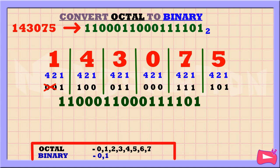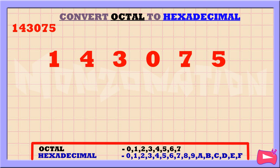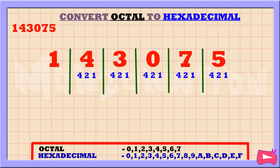We write a little 2 down here to indicate that this is a binary number, base 2. Let's convert the octal number 143075 to hexadecimal. The first step is to separate each octal digit. Then, let's write down 4, 2, and 1 below for each octal number. Let's start from the right. As you can see, 5 is the sum of 4 and 1. So, we're going to replace 4 and 1 with 1. We didn't use the 2, so let's replace it with a 0. Next, 7 is the sum of 4 plus 2 plus 1. So, we're going to replace 4, 2, and 1 with 1.